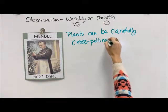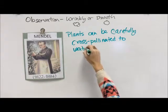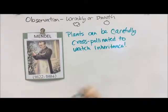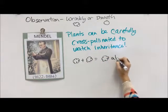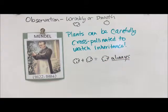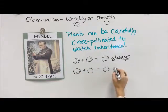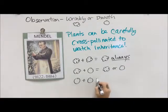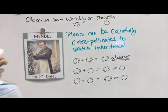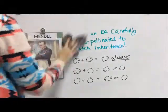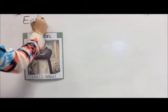The nice thing about plants is that they can be carefully cross-pollinated. You can manage whether plants will breed with one another by controlling where the pollen goes. He noticed that wrinkly plus wrinkly peas always gave him wrinkly peas 100% of the time. If he took a wrinkly and a smooth pea plant he could get wrinkly or smooth peas, and if he took two smooth pea plants he could also get wrinkly or smooth peas.